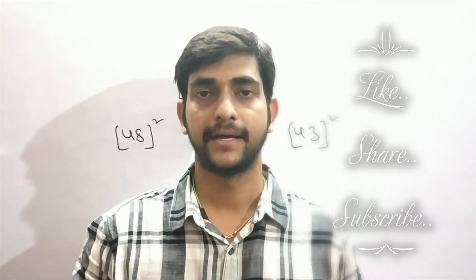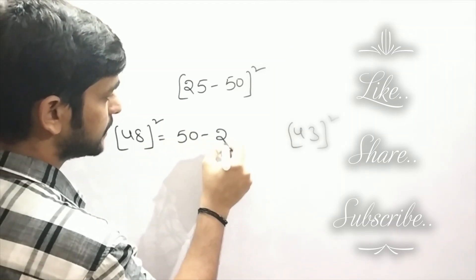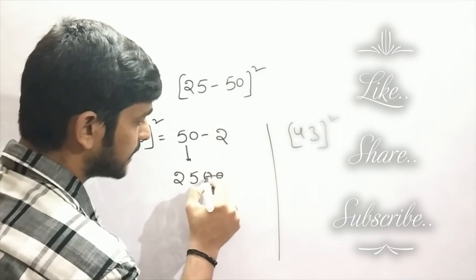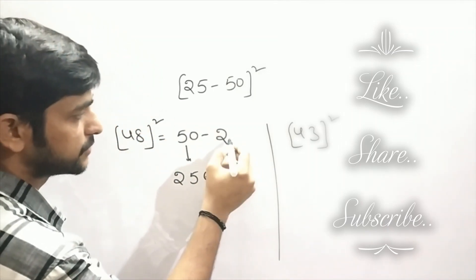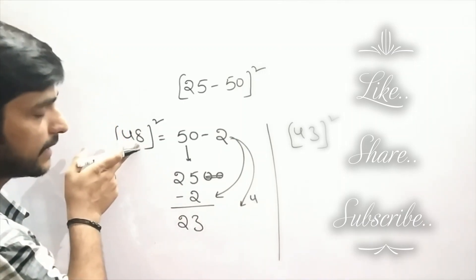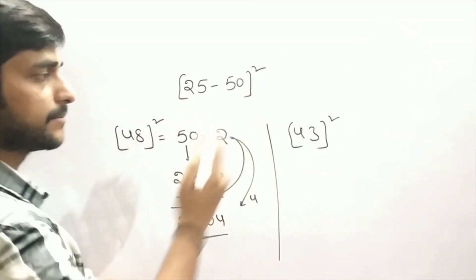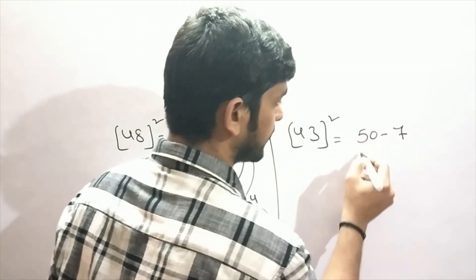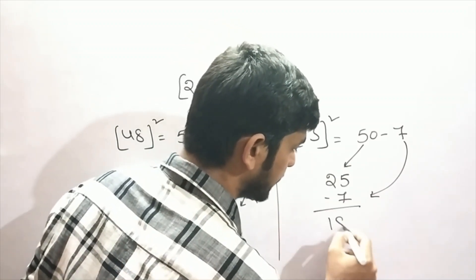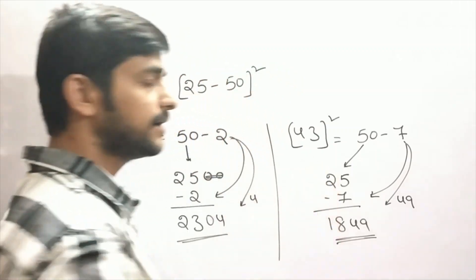Now we are going to find out squares from the range of 25 to 50. Consider number 48. 48 we can write it as 50 minus 2. We already know that 50 squared is 2500, so write 2500 and neglect the last 2 digits. Subtracting 2 from 25, here we are getting 23. And 2 squared will be 4 — since 48 squared is a 4-digit number, we write 04. So 48 squared will be 2304. Do the same process for 43. 43 we can write it as 50 minus 7. Taking 25 minus 7, that is 18. And 7 squared will be 49. So 1849 will be the answer for 43 squared.